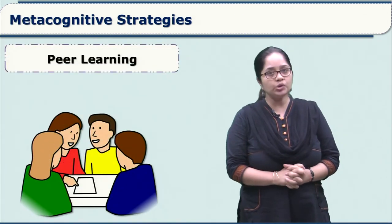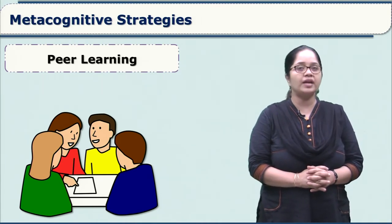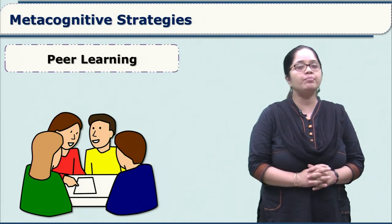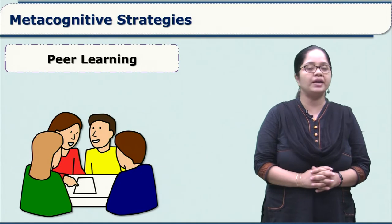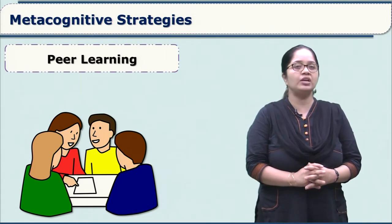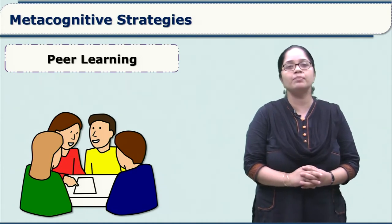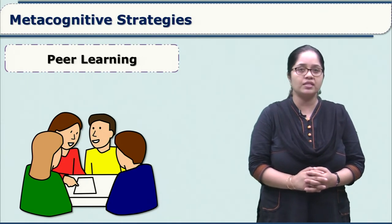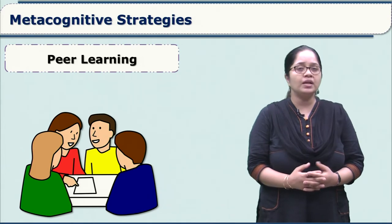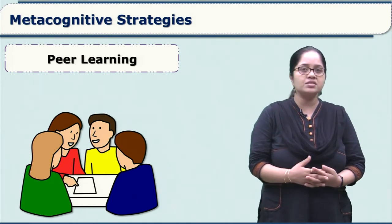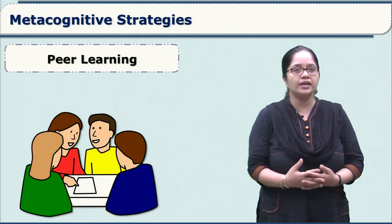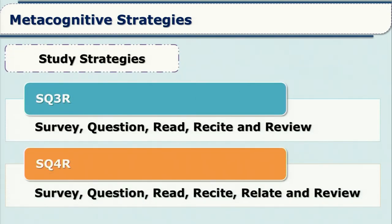As teachers, we need to enhance metacognition among our students and plan strategies to develop it. Peer learning is an effective strategy — we can ask students to collaborate and learn from each other, where material is given and they pose questions and answer in pairs or groups. This can lead to dialogic learning where questioning, finding answers, revisiting and reviewing content all take place. There is a lot of research done to find study strategies that are metacognitive in nature.